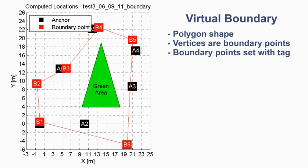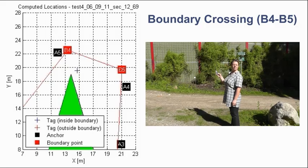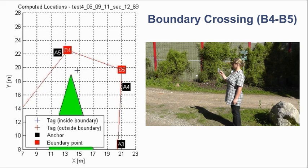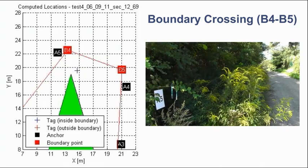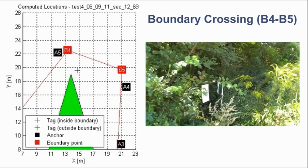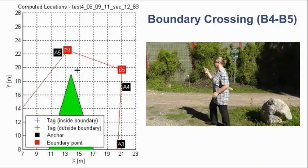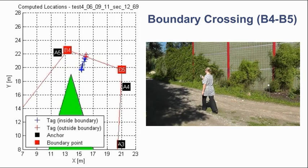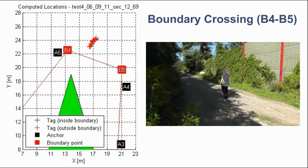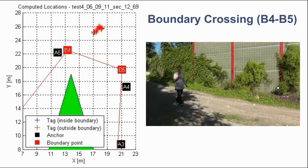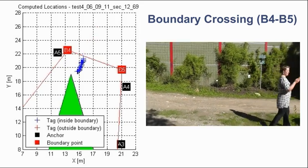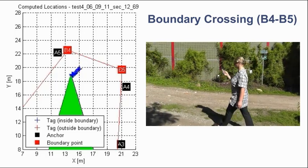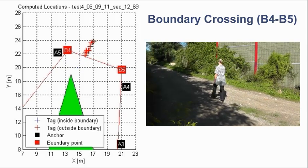The plot displays the results of the computation. In the next experiment we will test the boundary function with a moving tag. Boundary segment before B5 is next to the anchors A4 and A5. While the video shows the tag being moved perpendicular to the boundary segment, the real-time plot shows the computed tag positions. A blue cross is displayed if the tag is detected inside and a red cross if outside the boundary. The boundary transition occurs right upon crossing the boundary line marked with the flags.